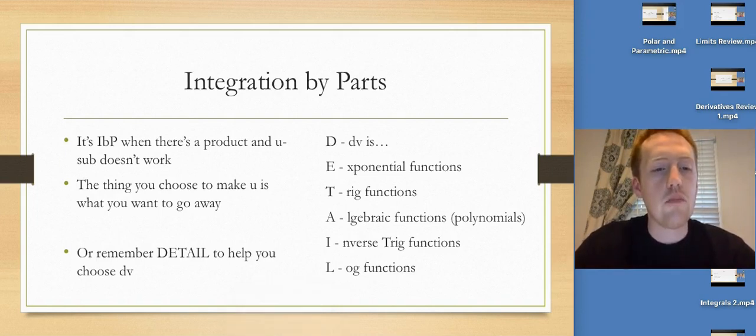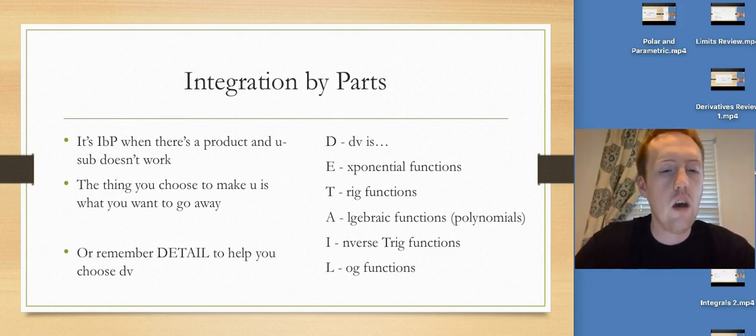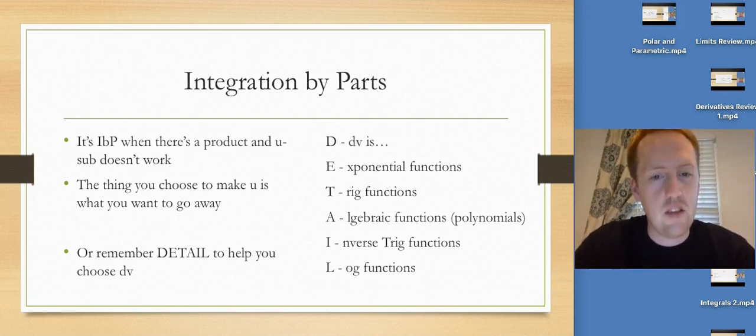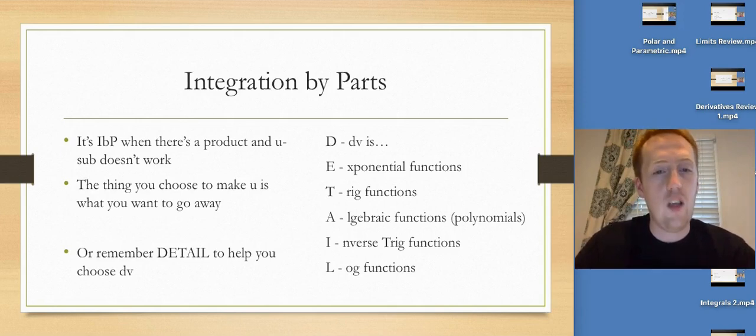I'm going to do integration by parts here because my first example requires both improper integrals and integration by parts. Basically, we use integration by parts when there's some product and a u-sub doesn't work. U-sub doesn't make the product go away. The thing you choose to make u is what you want to go away, usually. But if that's not something that you can logic out, then you can use that DETAIL acronym to help you choose what dv is. So it's dv is exponential functions, then we pick trig functions, algebraic which is polynomials, inverse trig, and log. That's what we pick for dv first. It's just a little acronym to help you out.